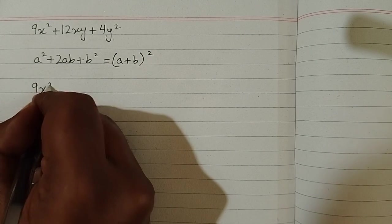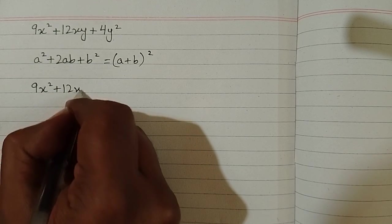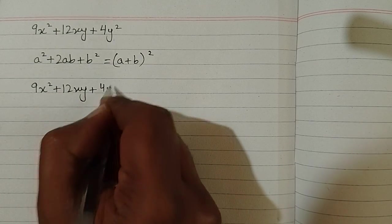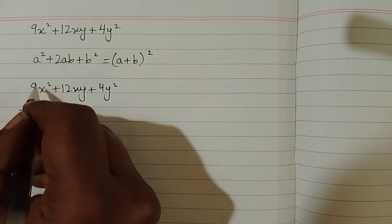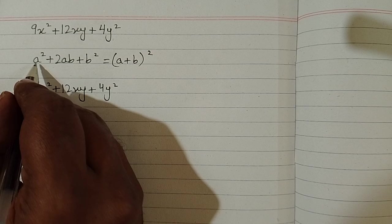And we have to factorize 9x square plus 12xy plus 4y square. So first of all we will write this structure and we put brackets in place of a and b.